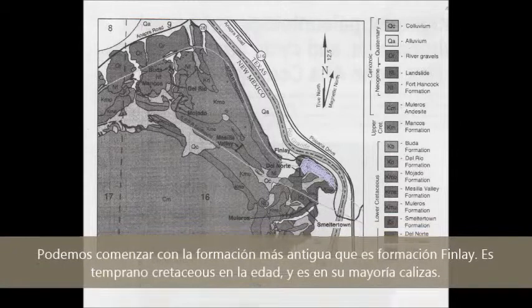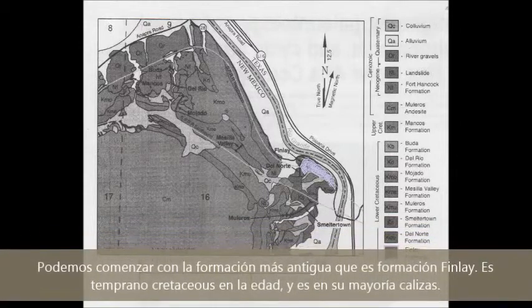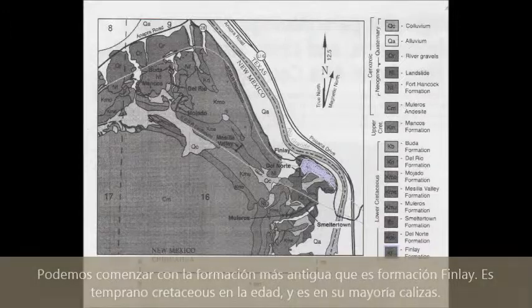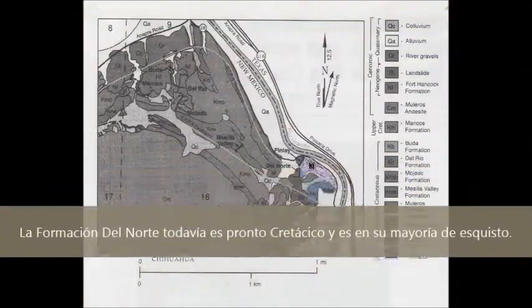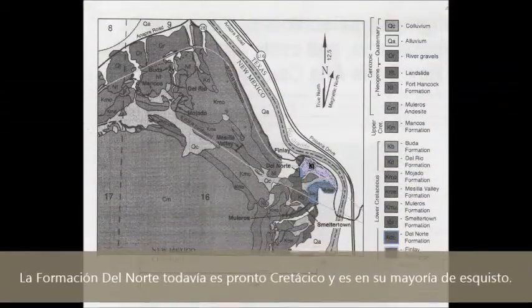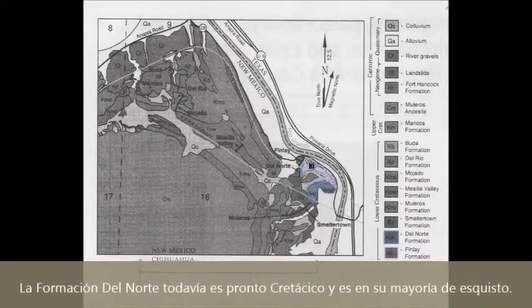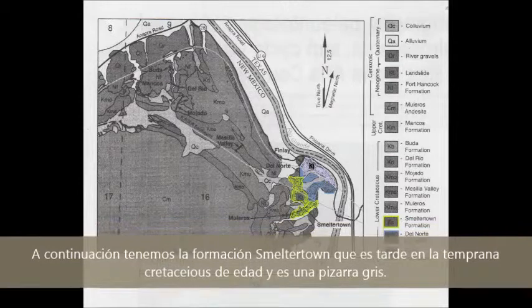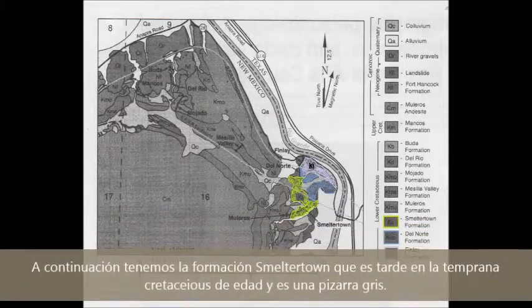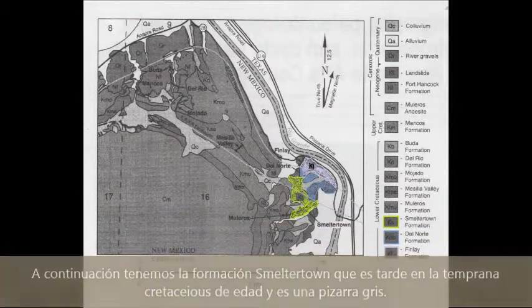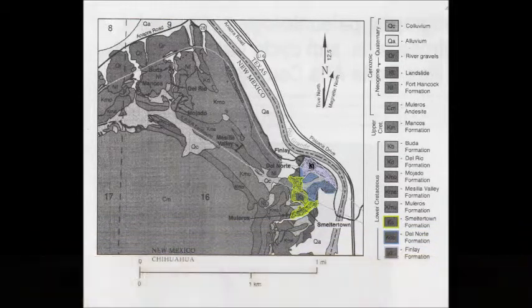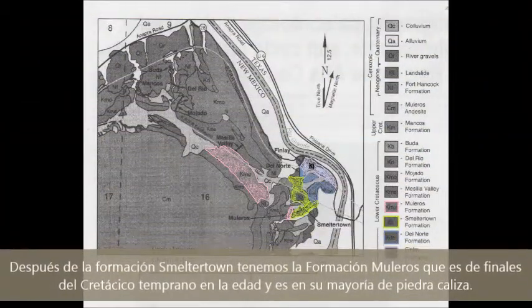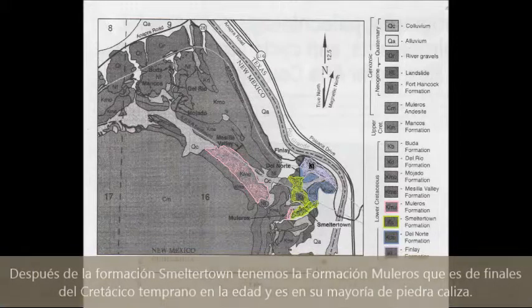We can start with the oldest formation, which is the Finlay Formation. It is early Cretaceous in age and is mostly limestone. The Del Norte Formation is still early Cretaceous and is mostly shale. Next we have the Smaltortown Formation, which is late early Cretaceous in age and is a grey shale. After Smaltortown we have the Moleros Formation, which is late early Cretaceous in age and is mostly limestone.